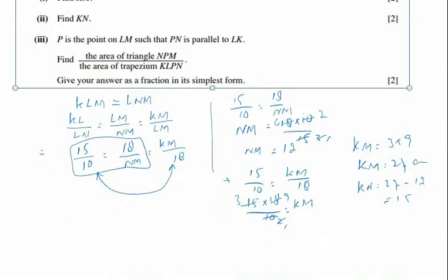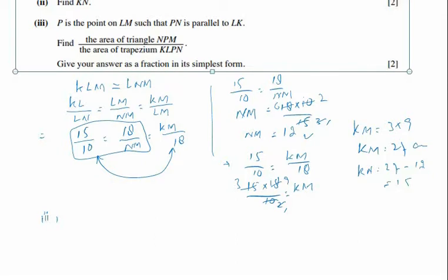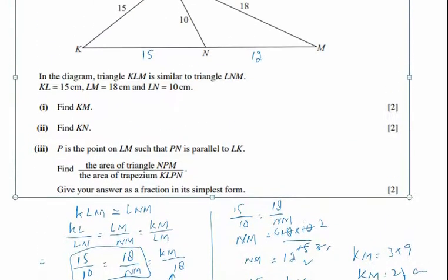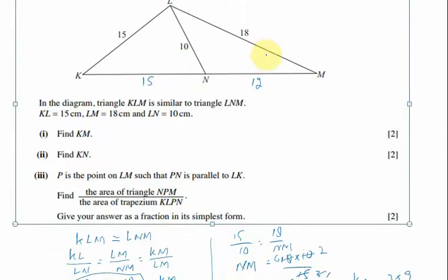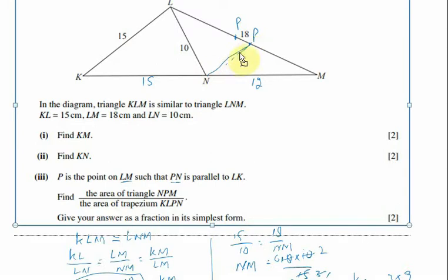Now in the second part, we have to find the area of triangle NPM and trapezium KLPM. Point P is taken such that these two lines become parallel.